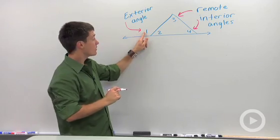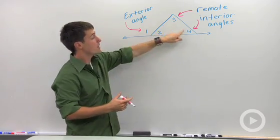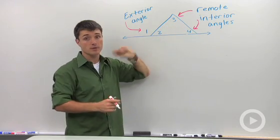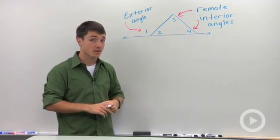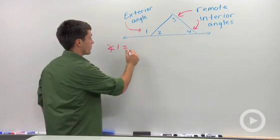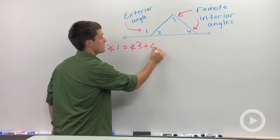So again, one is your exterior angle because it's outside, and the two angles that are not adjacent to angle one are your remote interior angles. There's a special relationship that exists here, and that is angle one is equal to angle three plus angle four.